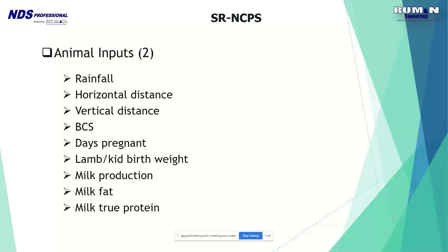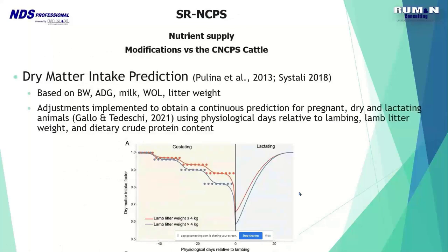Milk production can be either predicted or measured — sometimes it's not possible to measure it, so it can be predicted. Milk composition inputs include milk fat and milk true protein. For dry matter intake prediction, research from 2013 and 2018 was combined, using body weight, average daily gain, milk, week of lactation, and litter weight. Recent adjustments allow merging dry and lactating animals into a unified, well-fitted intake prediction for both sheep and goats.